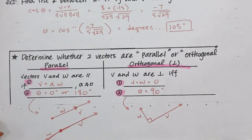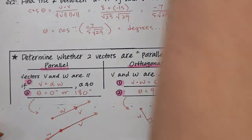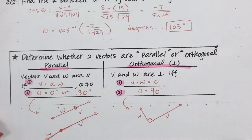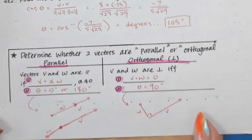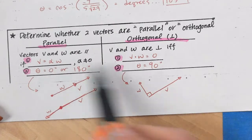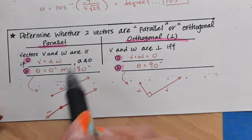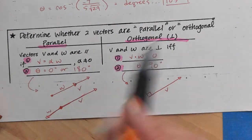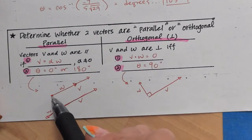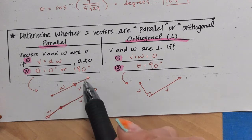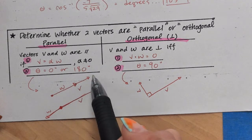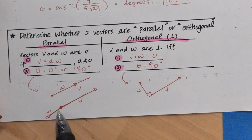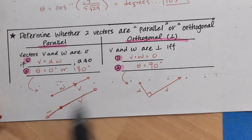Now we're talking about parallel versus orthogonal vectors. Orthogonal means perpendicular. Here are some pictures of parallel versus orthogonal. Parallel would mean that if they start at the same point, they have the same slope — they both go in the same direction or they go in exactly opposite directions. They make a line — that would be parallel.